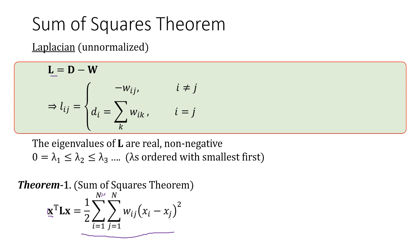Xi and xj here are the i and jth element of this vector x. So x transpose Lx is half of double summation over i and j of wij xi minus xj squared. That's the sum of squares theorem.